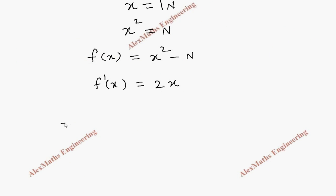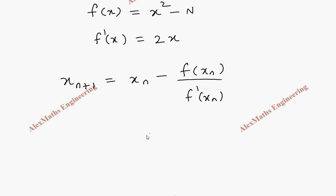Now using Newton-Raphson's formula, x n plus 1 is x n minus f of x n by f dash of x n. Let's substitute this. So this is x n minus x n square minus n whole divided by 2 into x n.